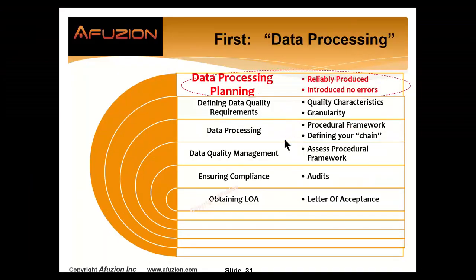Data processing — number one, you have to plan for it. Look around your room. That entity had building plans that were approved before it was built, then independent people assessed those plans. We need the same thing for aeronautical data: defined plans that provide proof that I can reliably produce data and have introduced no errors. Hopefully, I find errors from previous originators.